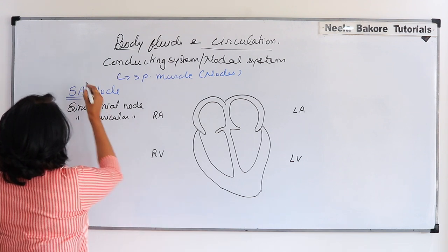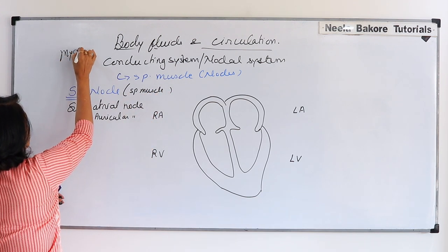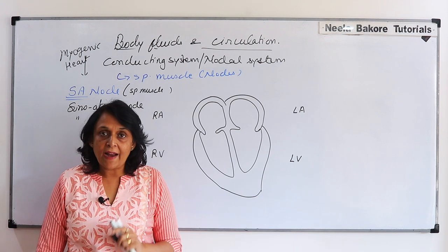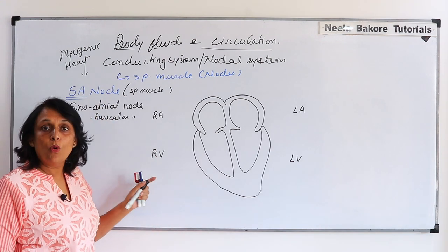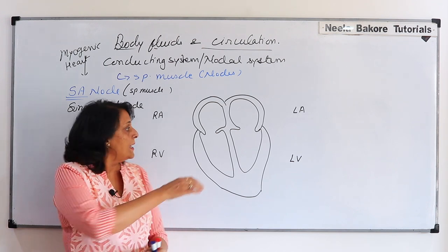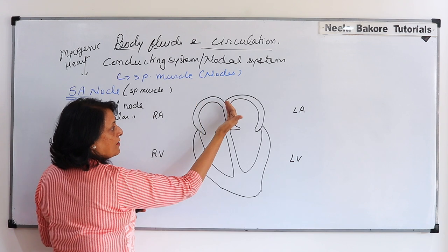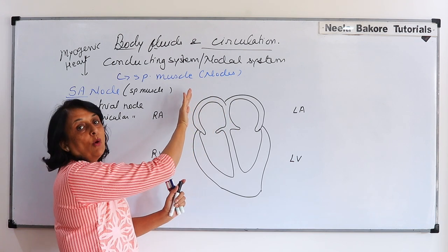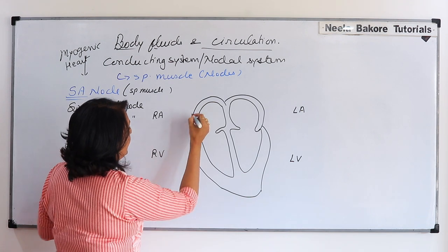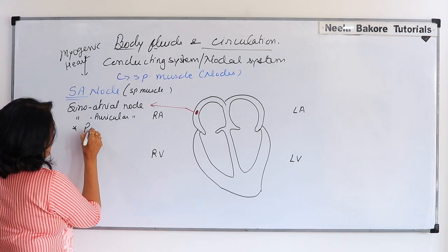So because the contraction stimulus comes from the muscles, we call it a myogenic heart. The SA node is a specialized muscle bundle and its location is on the right auricle's right wall. If this is a 3D structure, our heart is a complete compartment, so this wall will be the right wall. So the SA node is located on the right wall.